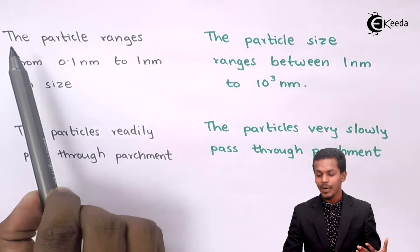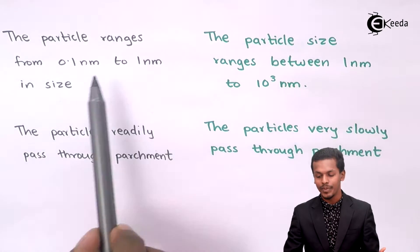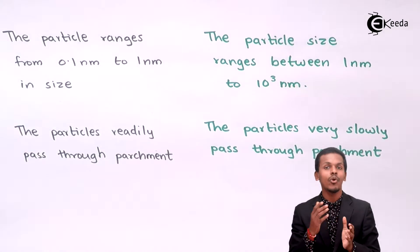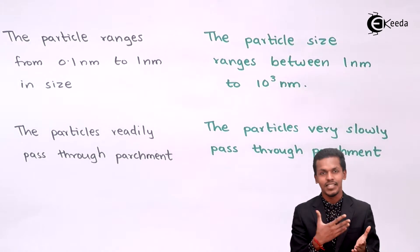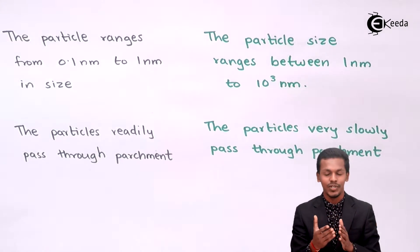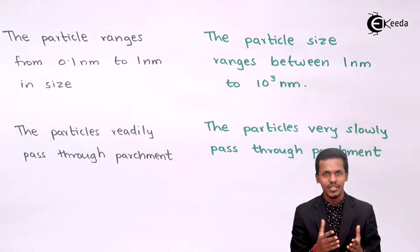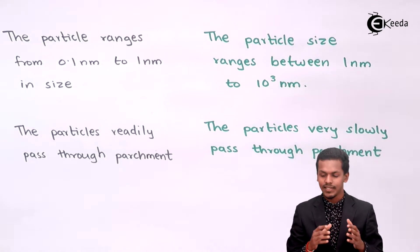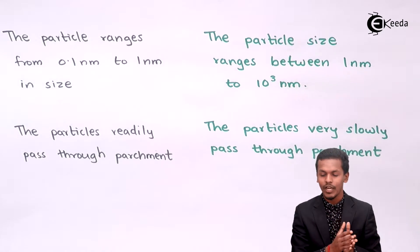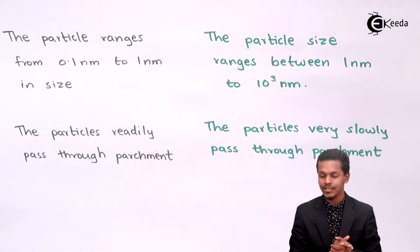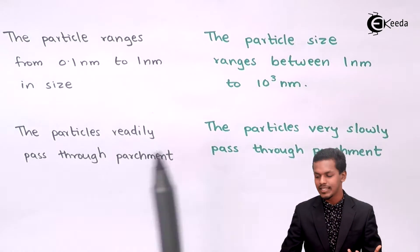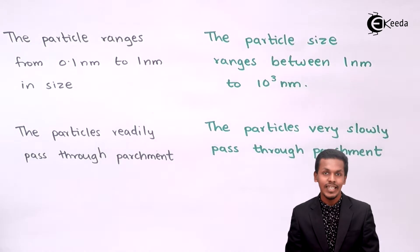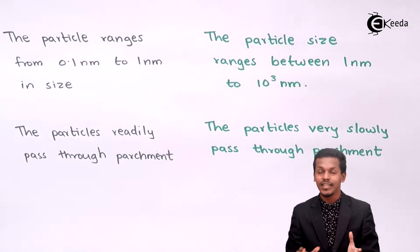The third point is that particle size ranges from 0.1 nanometer to 1 nanometer in true solutions. This applies to both solute and solvent particles. There are basically 9 kinds of systems when it comes to solutions. But for colloidal dispersion, the particle size is between 1 nanometer to 10³ nanometers. This difference in particle size range is a key distinguishing feature.